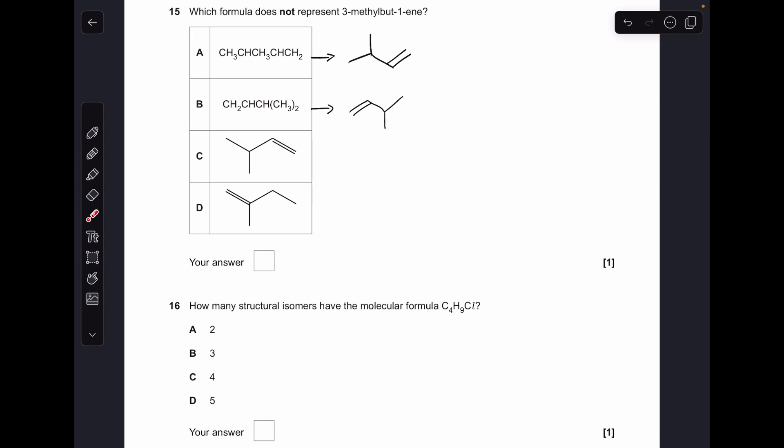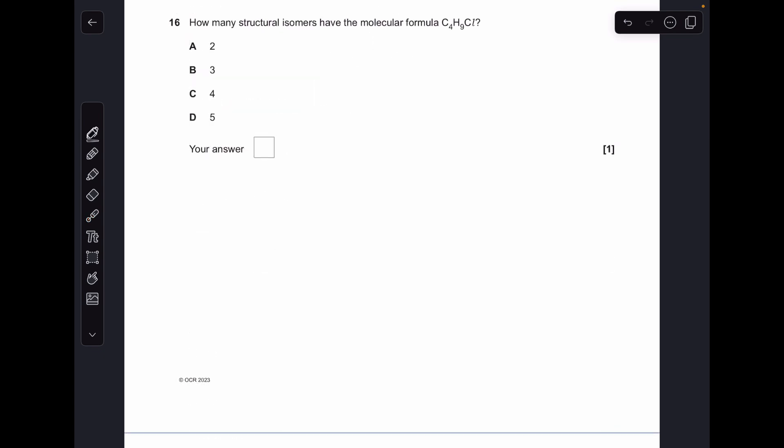Number sixteen. How many structural isomers have got the molecular formula C4H9Cl? I'll just do this in a systematic way: chain of four, Cl on the end; chain of four, Cl on the second. We'll drop the chain to a chain of three now, put the chlorine on the end, methyl group on the second, and also have that one as well. So four was the answer, option C.